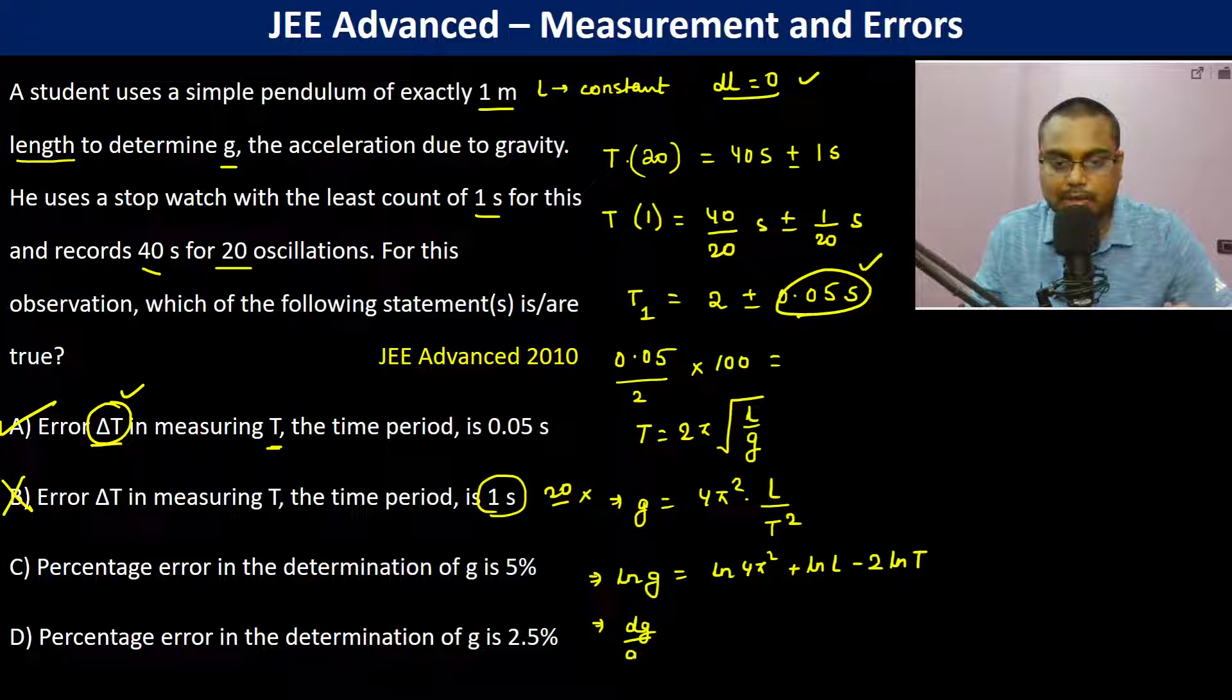Differentiating, δg/g equals... this differentiation is 0 because it's a constant. ln(L), L is constant, so therefore δL is 0.